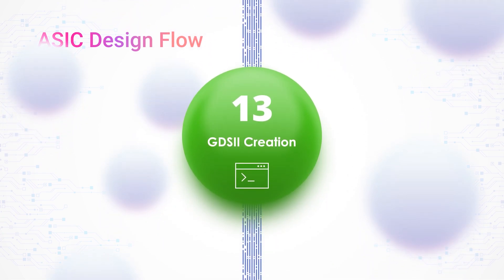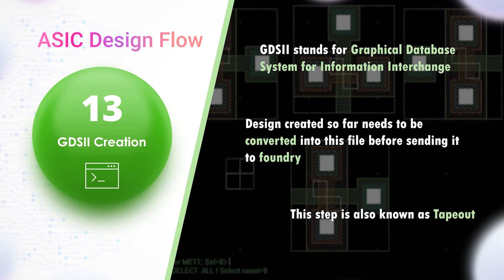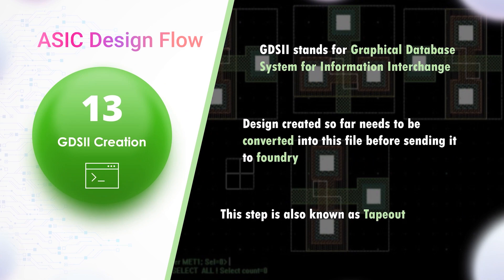GDS2 Generation: GDS2 stands for graphical database system for information interchange. This is the file used by foundries for chip fabrication. The design needs to be converted into this file format before being sent to the foundry. This step is also known as tape out.